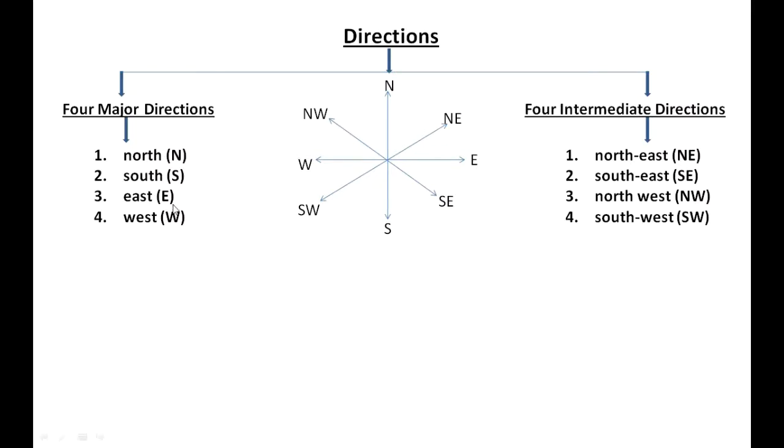Four intermediate directions are northeast, southeast, northwest, and southwest. Directions help in locating a place with greater accuracy.